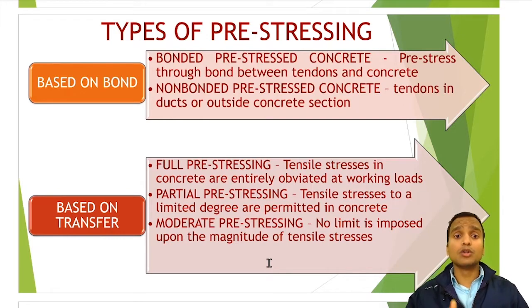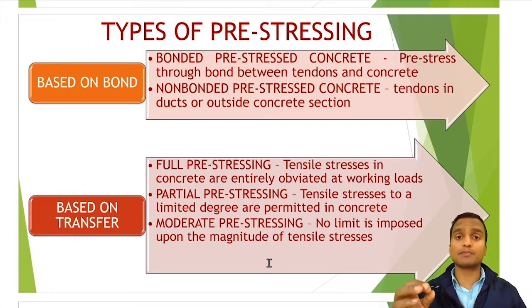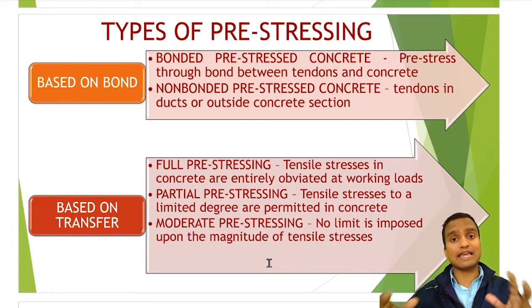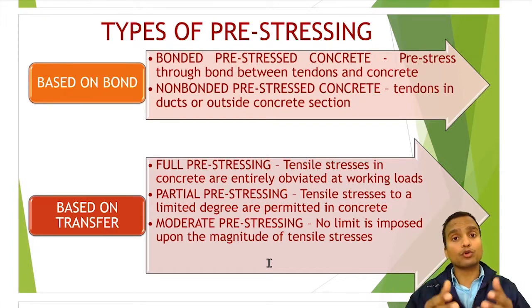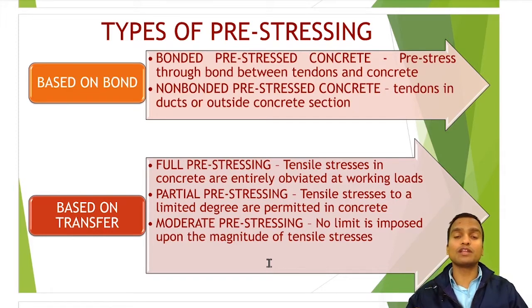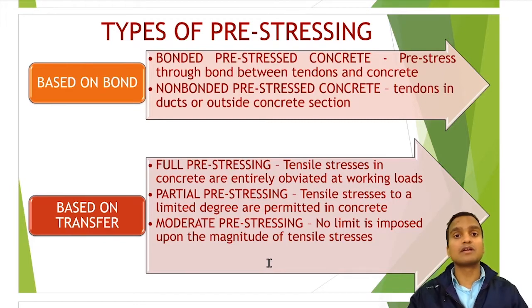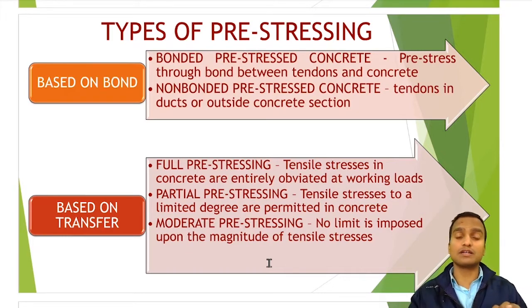If you want non-bonded PSC through post-tensioning, you don't need to do anything special — just pass the tendons directly through the ducts and tighten them with jacks. You need not grout in that case, because the product we are getting is automatically non-bonded. The ducts were already provided before concrete was poured, so there is an annular space; just insert the steel, tighten it, and apply the jack. This is the classification based on bonding.